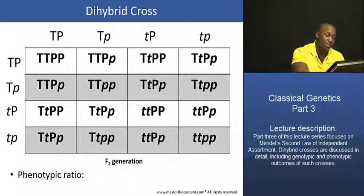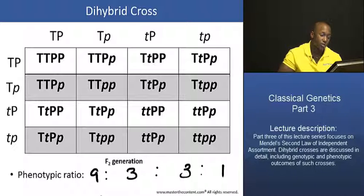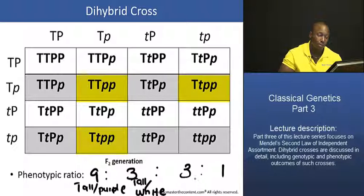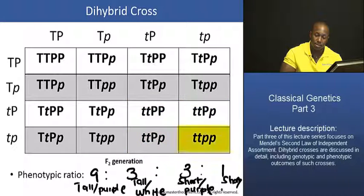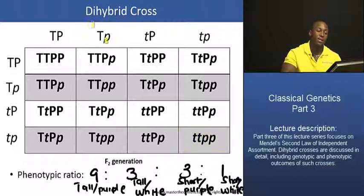So as you can see in the F2 generation, we have the 9 to 3 to 3 to 1 ratio. We have 9 plants that are tall and purple, 3 plants that are tall and white, another 3 that are short and purple, and only 1 that has both recessive traits — one that is short and white. So the 9:3:3:1 phenotypic ratio is observed in this dihybrid cross as well.